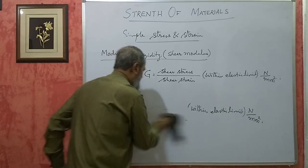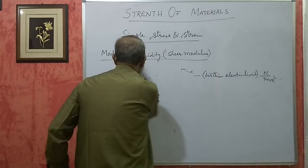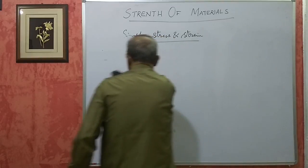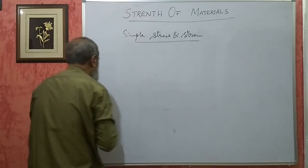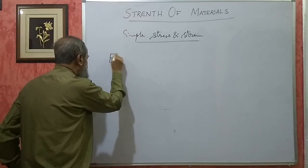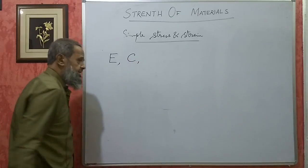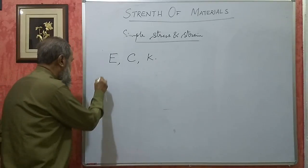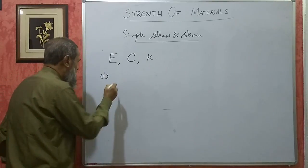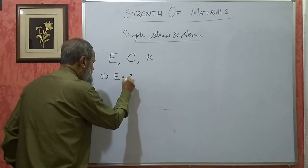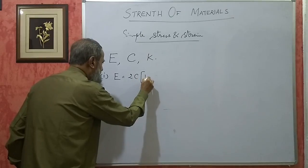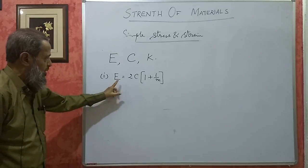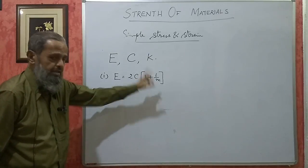The three moduli of a material are E, C, and K. E is modulus of elasticity or Young's modulus, C is rigidity modulus, and K is bulk modulus. These three are connected by formulae. Number one: E = 2C(1 + 1/M). This relationship connects Young's modulus, rigidity modulus, and Poisson's ratio. If we know any two, the third one can be found out.